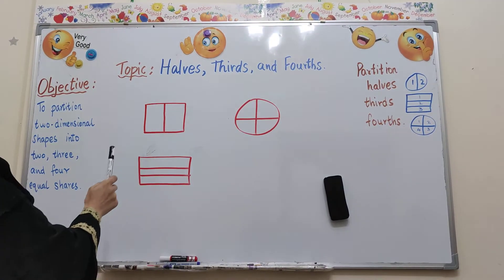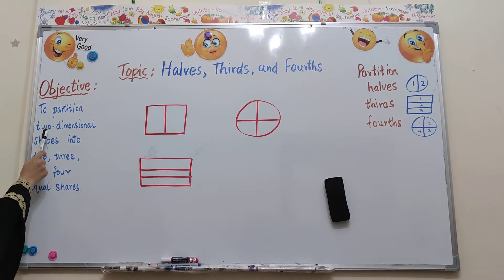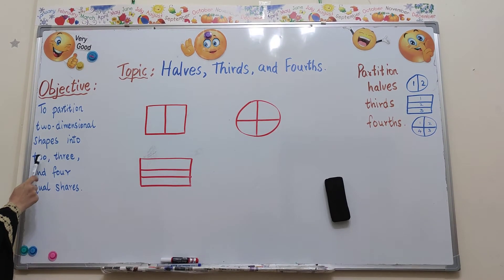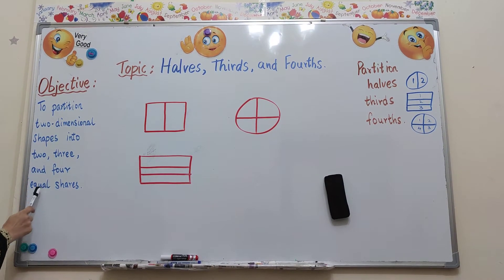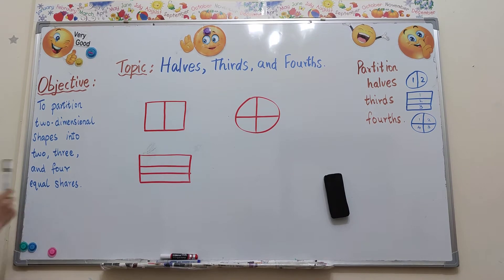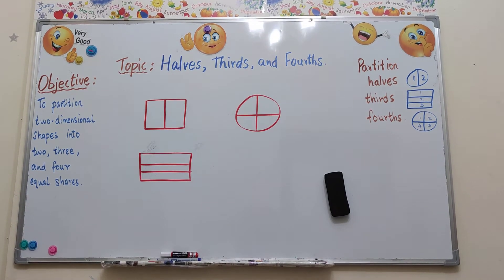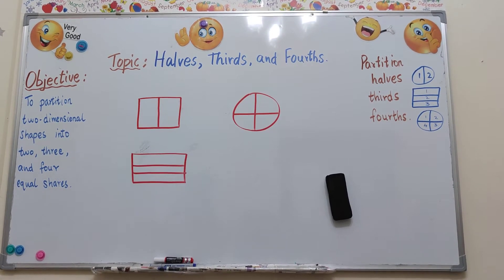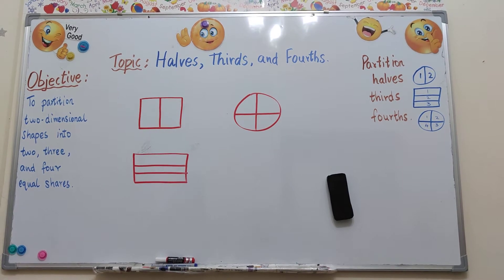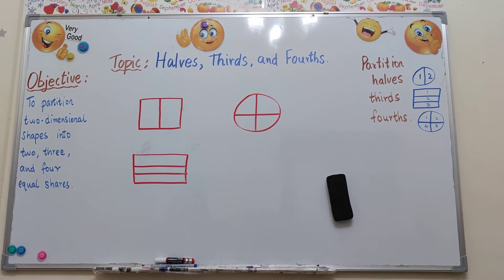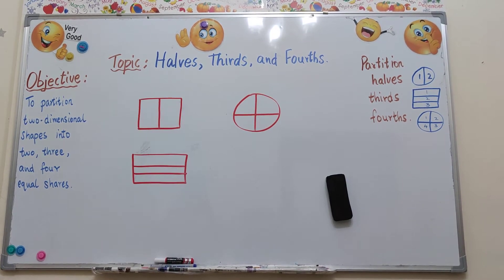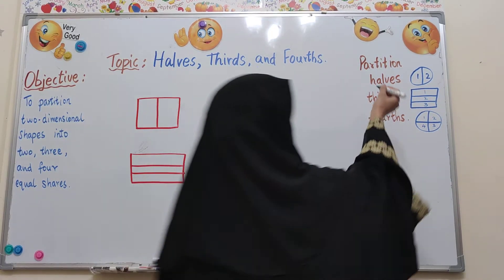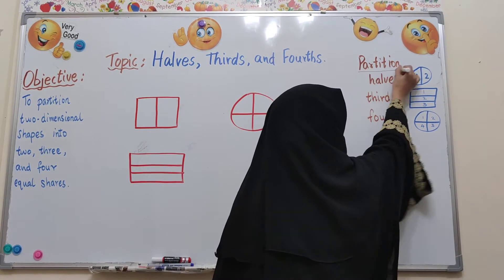So what's our objective? To partition two dimensional shapes into two, three and four equal shapes. Now let's see first what's the meaning of partition. When I say partition or separate shapes into equal parts, I have to make it into equal parts.